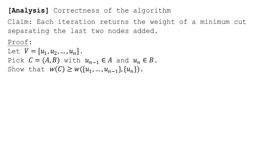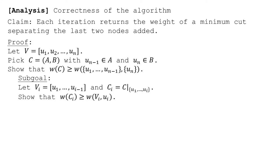To make the proof easier, suppose there are n vertices u1 through un. The cut returned by the iteration has un on one side and all other vertices on the other. We take a cut C which separates un from un-minus-one, and we want to show that the weight of C is at least the weight of the cut returned. Let Vi be the set of vertices from u1 up to but not including ui, and let Ci be the cut C restricted to vertices u1 through ui. If ui is an active node, we'll show that a key inequality holds. If this inequality holds for all active nodes, the claim is proven, since the last node is active.